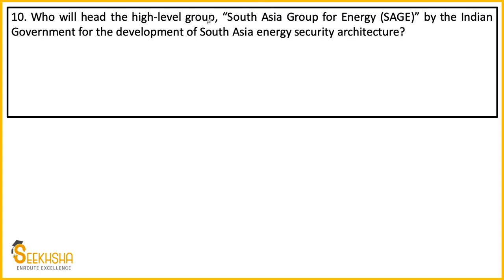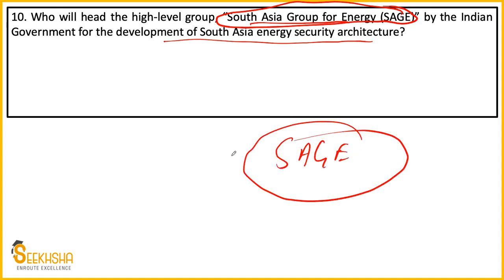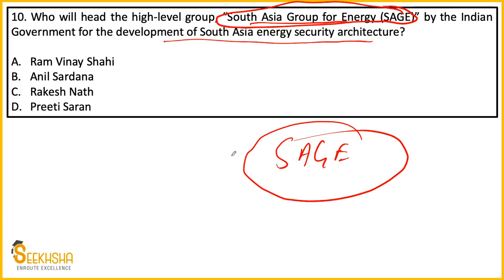Tenth question — Who will head the high-level group South Asia Group for Energy (SAGE), constituted for the development of South Asia energy security architecture? Options: Ramvinae Shahi, Anil Sardana, Rakesh Naath, Priti Saran. The answer is option A — Ramvinae Shahi. This is a factual question — remember it. SAGE can also be asked as 'SAGE recently seen in news is related to what' with options about energy, defense, or environment.